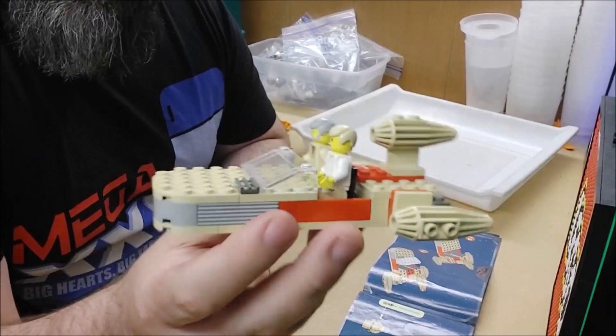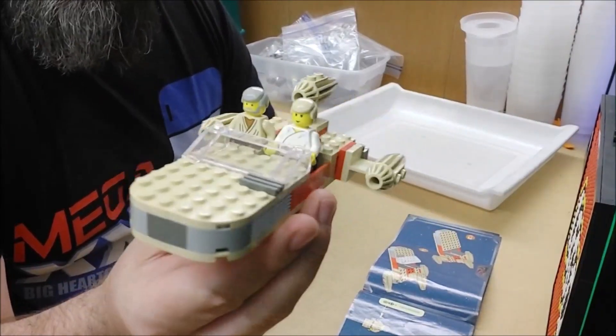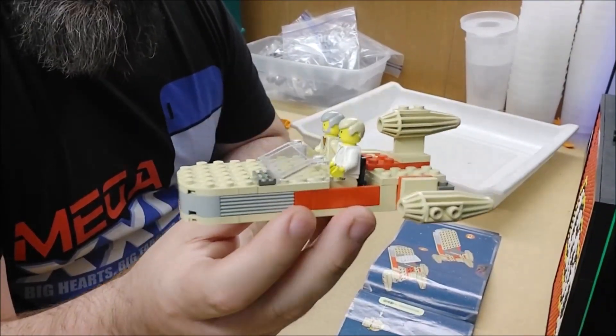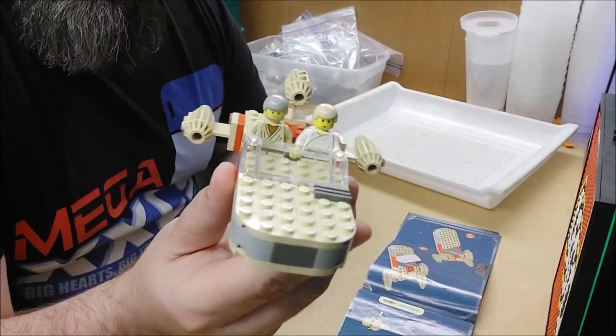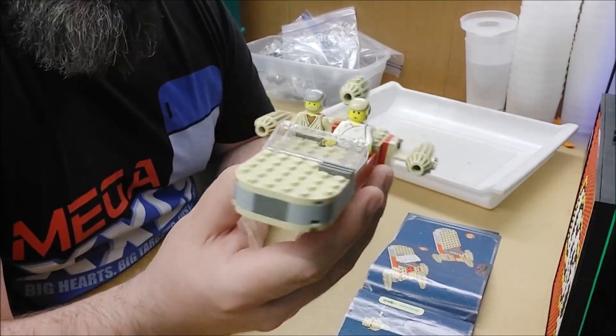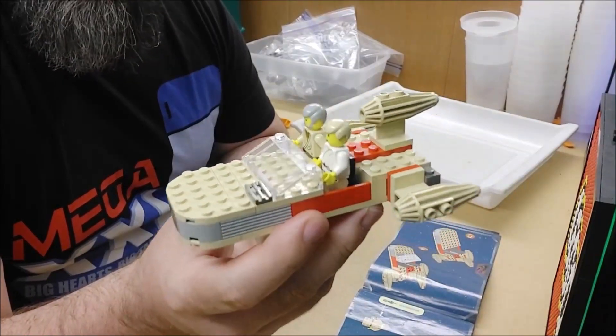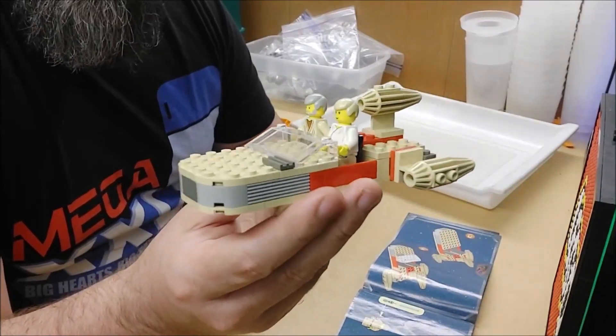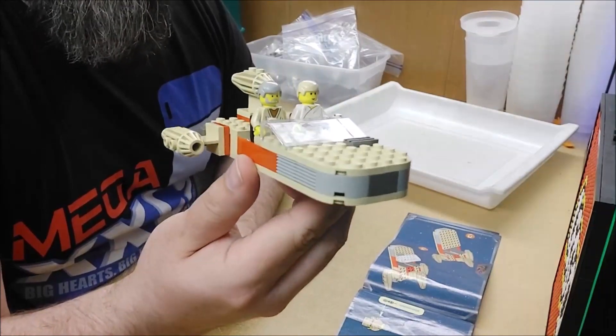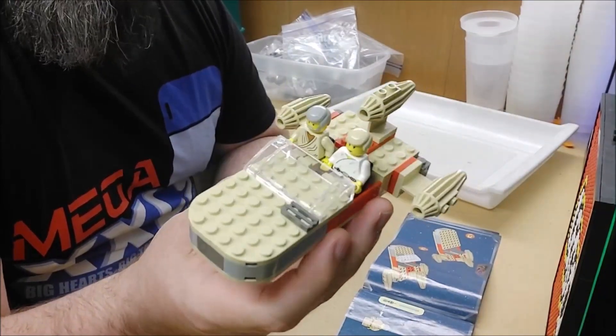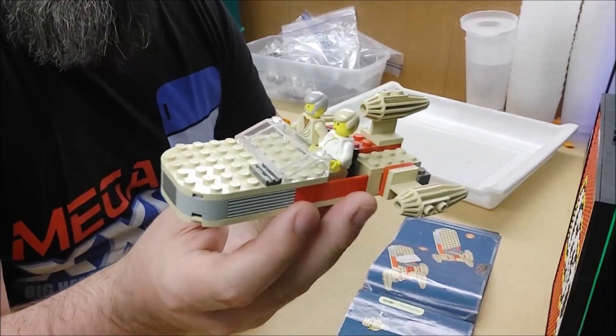And there it is. We have the Landspeeder. It's really quite impressive given the parts that existed back then. This was still when they didn't have a lot of specialty parts, so they had to make this out of existing parts. I think they did a decent job of having it be minifig scale, getting the general shape and look of it.